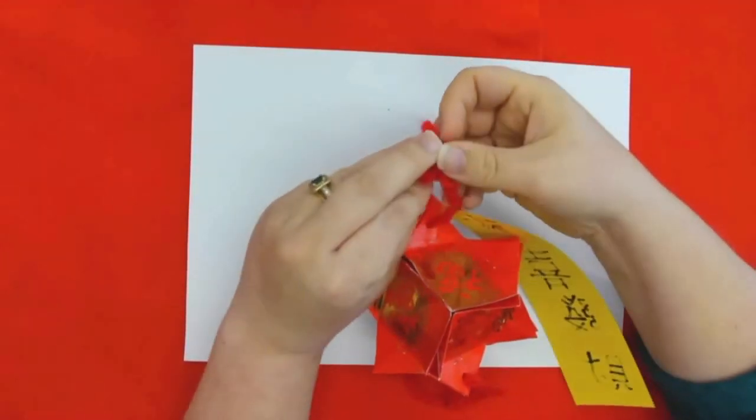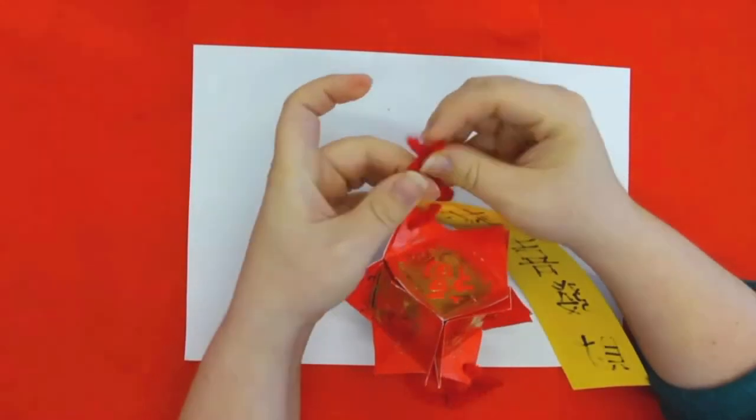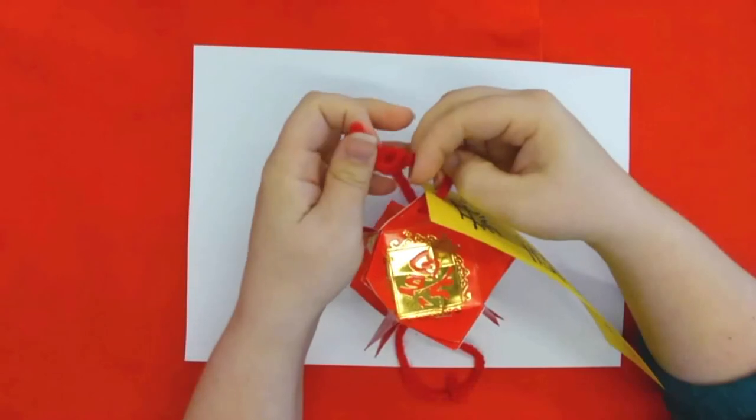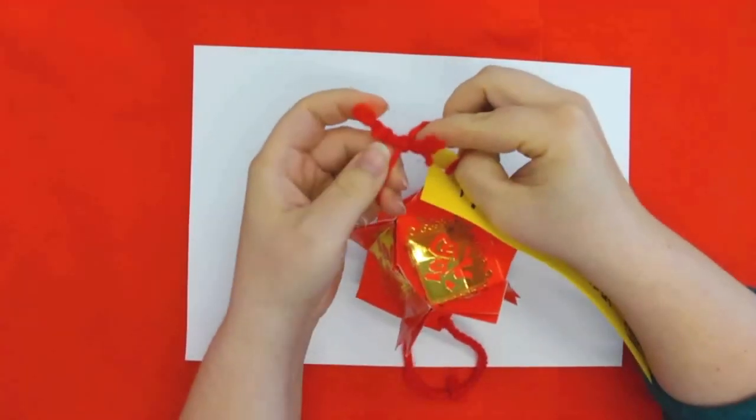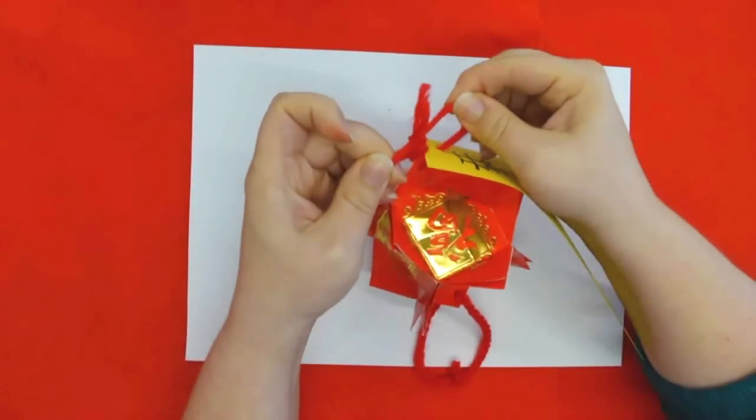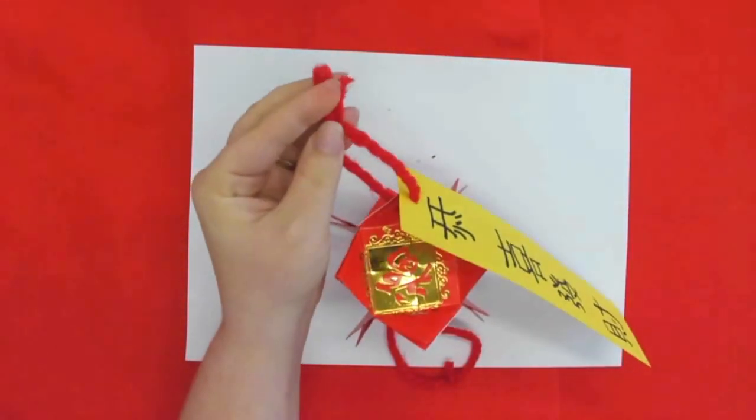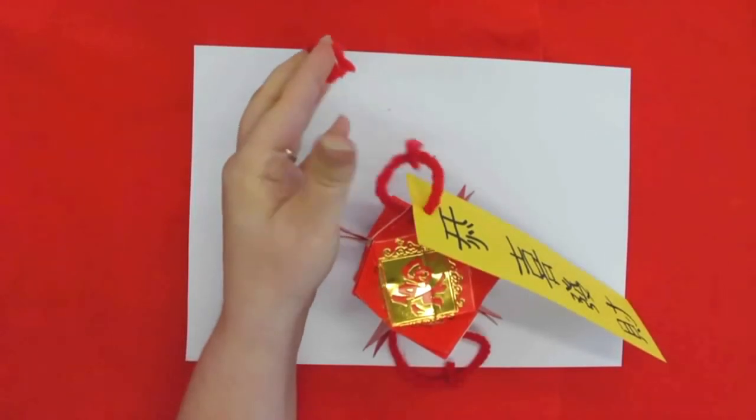Same way as before, a little double knot towards the top, and pull tight. And then just cut off the little excess pieces.